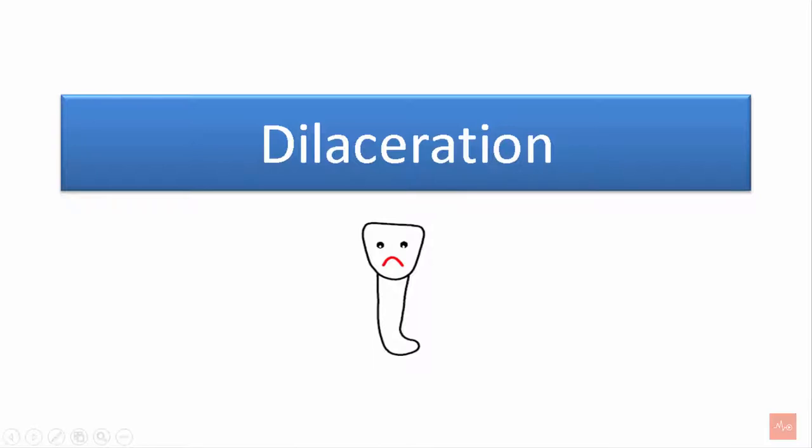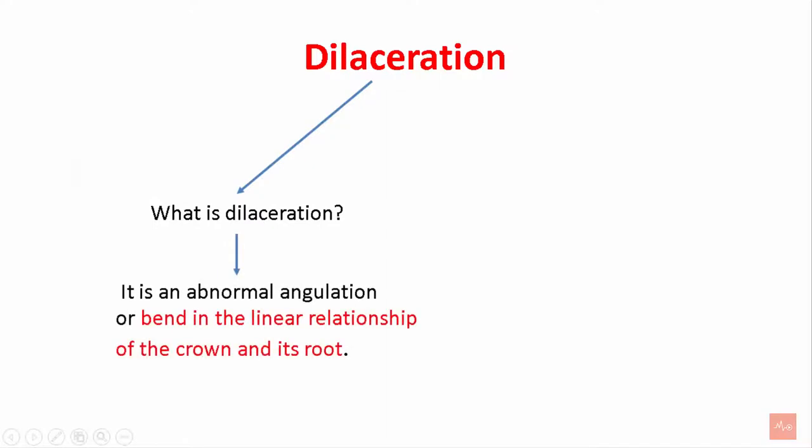Welcome back to MediClass. Dilaceration. What is dilaceration? It is an abnormal angulation or bent in the linear relationship of the crown and its roots.